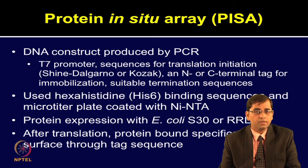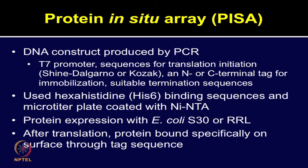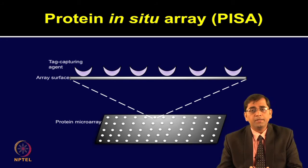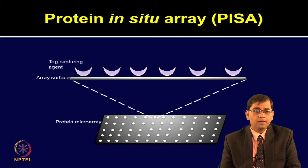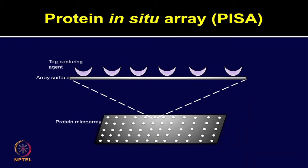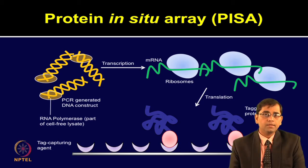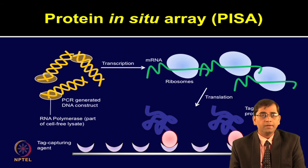Protein expression can be performed using an E. coli based system or rabbit reticulocyte lysate. Once translation is finished, the protein synthesized by the cell-free expression system specifically binds on the surface through the tag sequence. In the PISA protein array method, the surface is coated with a tag capturing agent. This method utilizes hexahistidine tags in the construct and the microarray titer plate coated with nickel-NTA. The DNA construct contains a T7 promoter sequence for translation initiation, an N-terminal sequence and the termination sequence. Once protein expression is carried out, the protein binds specifically on the surface through the tag sequence and the unbound material can be washed off.